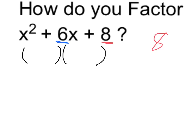So possible factors of 8 are 8 and 1, or 2 and 4. Now we know that 2 times 4 is equal to 8, while 2 plus 4 is equal to 6. So these are the factors that we want.